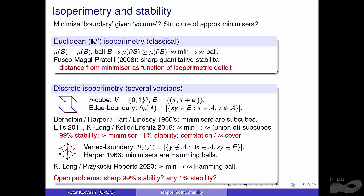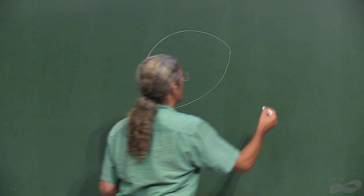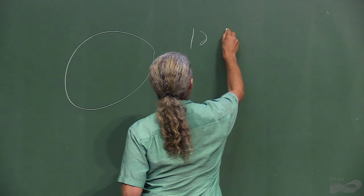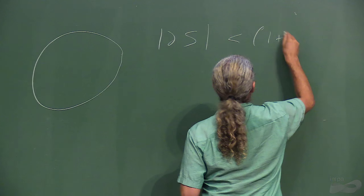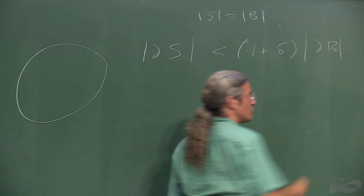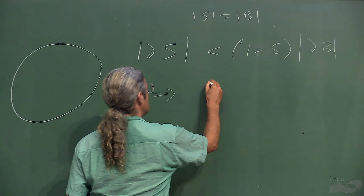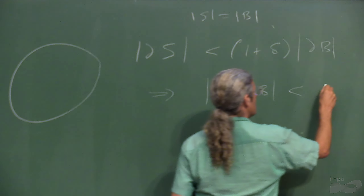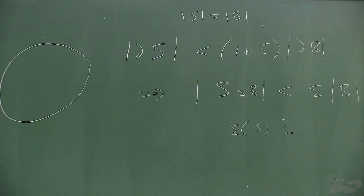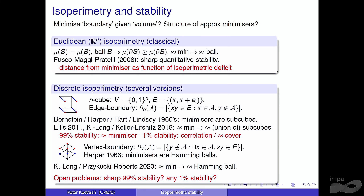There's a long line of research trying to understand the stability of this inequality: if the surface area is close to minimum, does it tell you that you're very close to a ball? The sharp form of this is a result of Fusco, Maggi, and Pratelli. If the measure of your shape is within a factor of one plus delta of the minimum, the distance between the shape and the ball is less than some epsilon fraction — and the sharp result is that epsilon scales like the square root of delta.